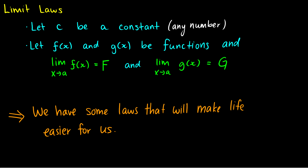We're going to look at limit laws. We're going to end up taking limits algebraically, but it would be nice to have shortcuts and certain properties we can use to make our limit solving easier. For the next few slides, I'm going to let c be a constant, which is just any number. I'm also going to let f of x and g of x be functions, where the limit as x goes to a of f is equal to F, and the limit as x goes to a of g of x is equal to G. These laws I introduce are going to make things much easier for us to deal with algebraically. You would prove these in a later analysis course, but for this course, we won't prove them.